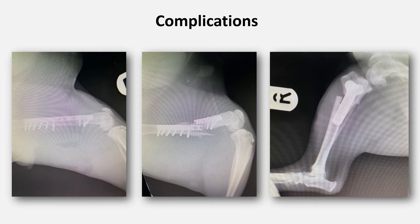Almost all orthopaedic complications encountered will be caused by the surgeon. Implant failure, for example the breaking of a plate, loosening or snapping of cerclage wire, or migration of an IM pin, are not down to faults with the metal implant, but incorrect use of the implant by the surgeon. As I said right at the beginning of the talk, orthopaedic surgery can be very unforgiving, but if we stick closely to the rules and principles, then we can dramatically reduce our chances of encountering serious complications.